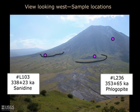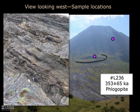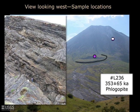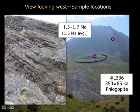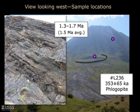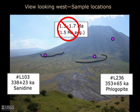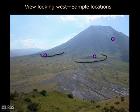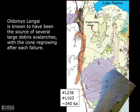Sadly, an attempt to date a nephelinite clast from a tuff breccia exposed up slope in the eastern chasm yielded an age much too old — about 1.5 million years. We made two efforts with this sample, getting similar ages from volcanic glass and from a nepheline-rich mineral separate made from the nephelinite clast. The 1.5 million year age, impossibly old stratigraphically and geomorphically, serves notice about the risks of excess argon in some volcanic rocks in the region.